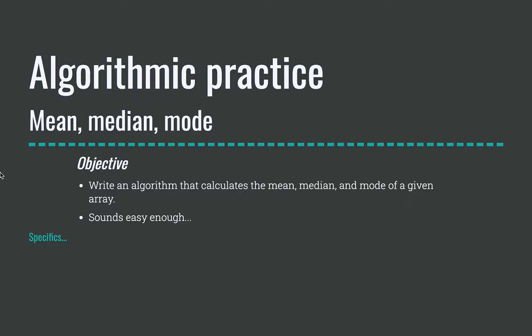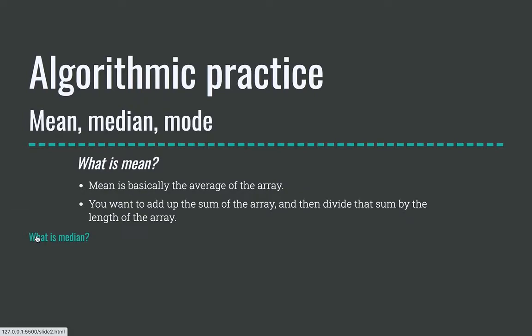Objective: write an algorithm that calculates the mean, the median, and the mode of a given array. So what is the mean? The mean is basically the average of the array. What you want to do is add up a sum of the array — create a sum variable — and then divide that sum by the length of the array.